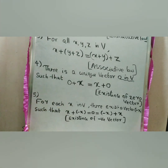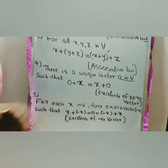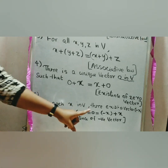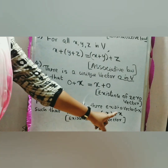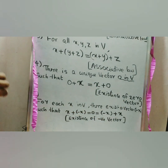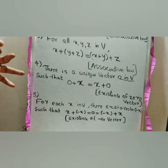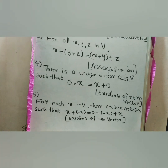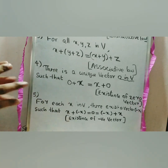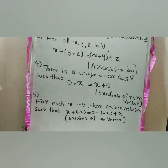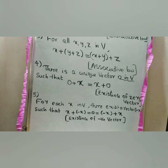Fifth property: for each x in V, there exists a vector minus x such that x plus (minus x) equals 0, which also equals minus x plus x. This property is known as the existence of the negative vector.